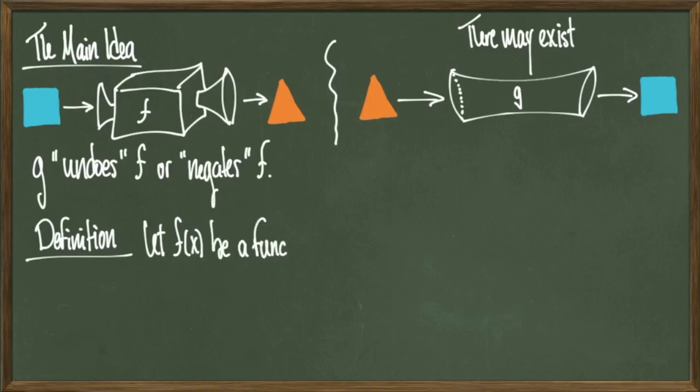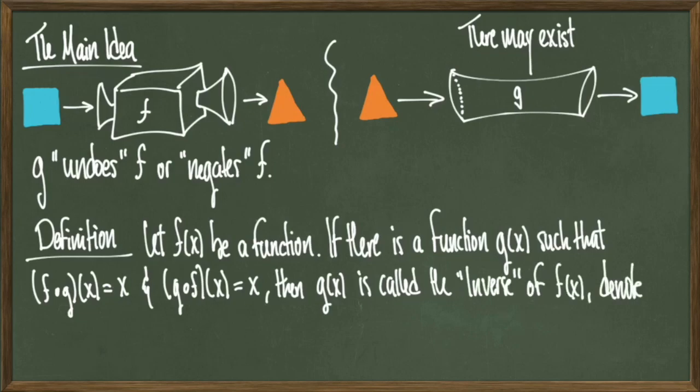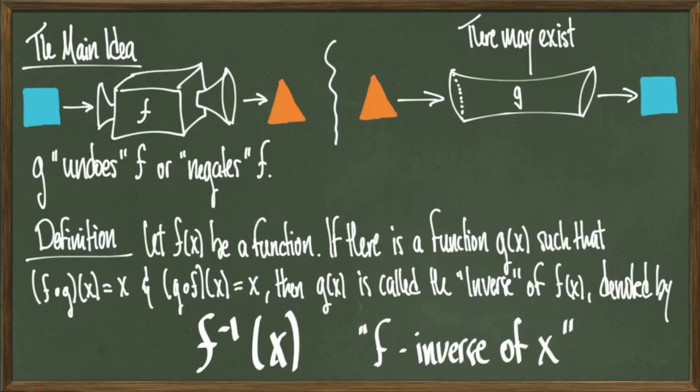By definition, let f be a function. If there is a function g such that f composed with g is equal to x and g composed with f is equal to x, then g is called the inverse of f and is denoted by f to the negative 1 of x. The common phraseology is f inverse of x.